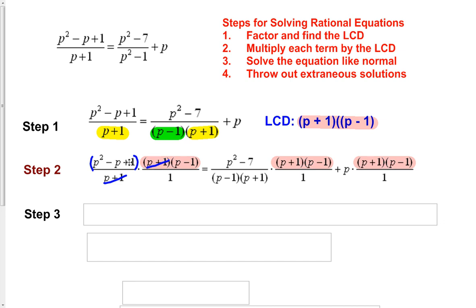Remember, anything being added and subtracted cannot be cancelled out — you can only cancel terms that are grouped together being multiplied. This p plus 1 was one whole group and cancels with the p plus 1. You can't cancel out part of a group. Continuing, we have a p minus 1 and a p minus 1 that cancel, and a p plus 1 and a p plus 1 that cancel. The last term has nothing to cancel in its denominator. All our denominators are now completely gone.